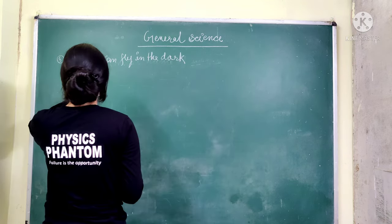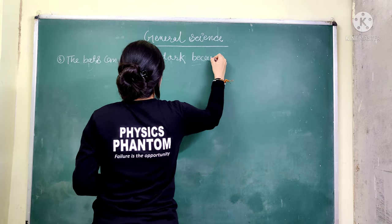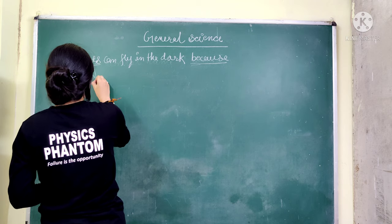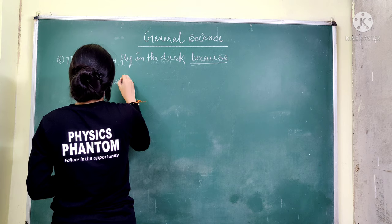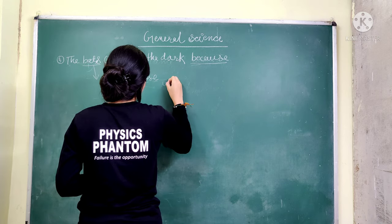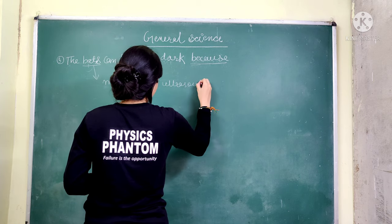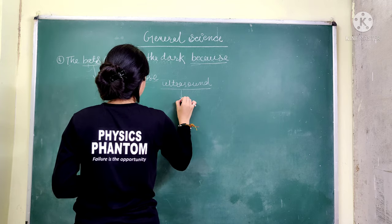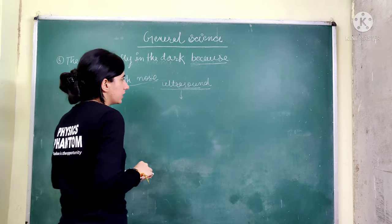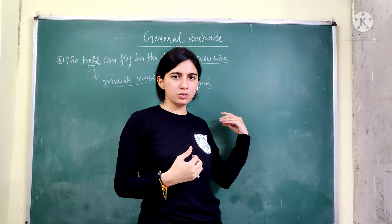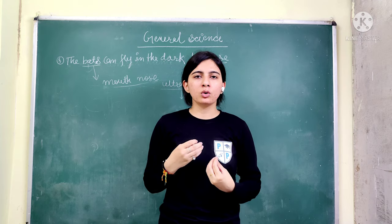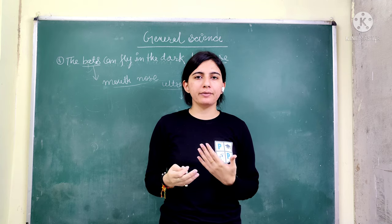Question number three: bats can fly in the dark. Because bats produce a kind of sound through their mouth and nose — these are called ultrasonic waves. This is a very high range frequency. Bats produce ultrasonic waves, and when those waves hit an object, they reflect back like an echo. Bats get an image of the objects around them from these reflected sound waves.